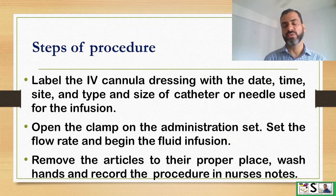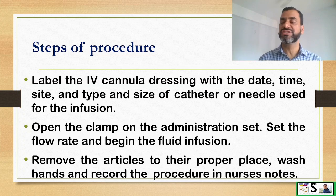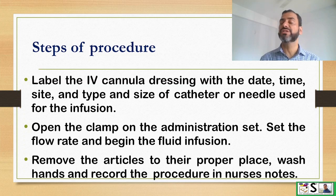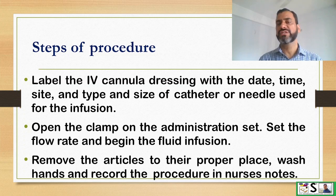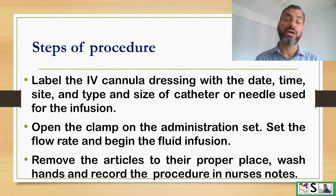Label the cannula with the date, time, and size of the catheter and needle used. Open the clamp on the IV drip set or administration set and set the flow rate as previously calculated. Remove the articles to their proper place and return frequently to check the site for infiltration or whether the cannula has come out.